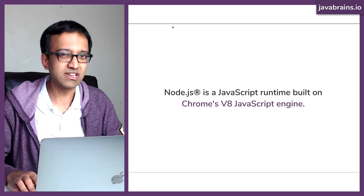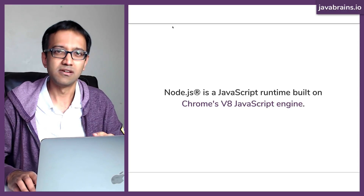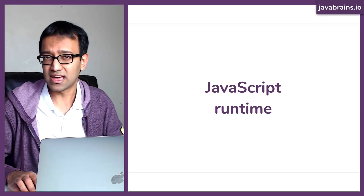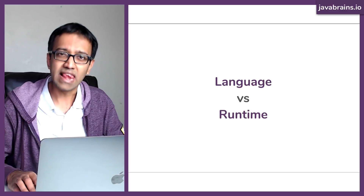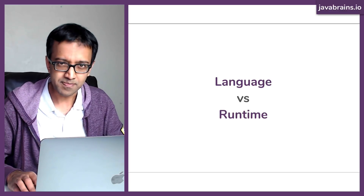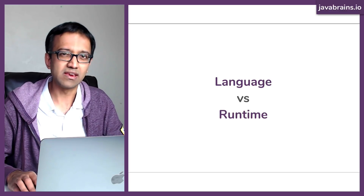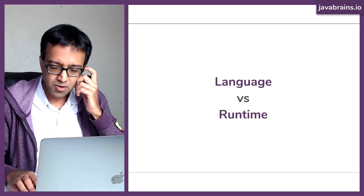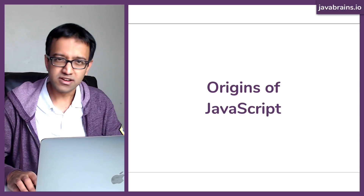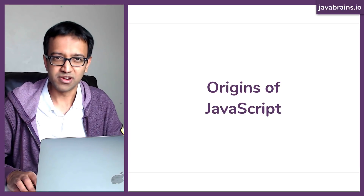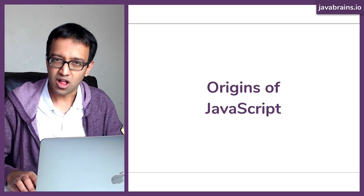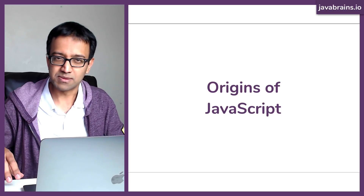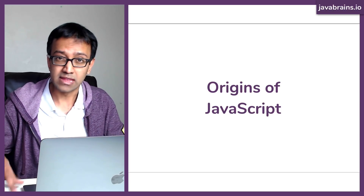That's actually what Node.js is — it's a JavaScript runtime. But in order to understand what a JavaScript runtime is, we need to really understand the difference between language and runtime. What's the difference between a language and a runtime? So think about the origins of JavaScript. Why was JavaScript created? It was created to solve a specific problem, and that problem is to achieve some dynamic functionality in the browser.